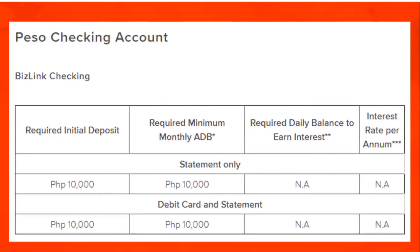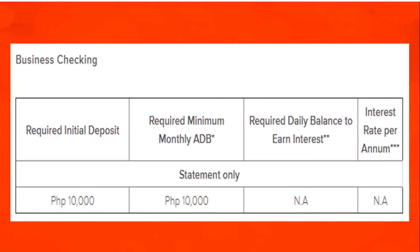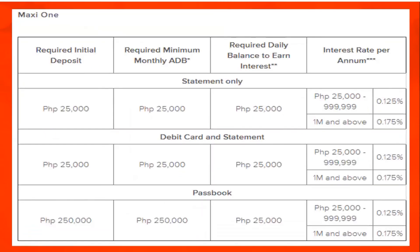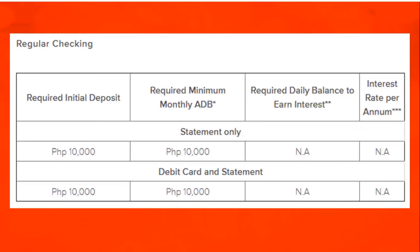Peso checking account. Bislink Check-in with debit card and statement. Business Checking with statement only. Maximum One with statement only, debit card and statement, and passbook. Tutorial Check-in with debit card and statement. Strip card.